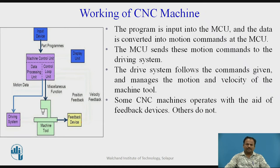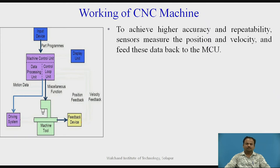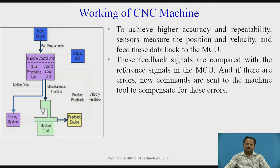Some CNC machines operate with the aid of feedback devices; others do not. Without feedback, the tools may overshoot or may not reach the desired position because of inertia, wear and tear, and friction. To achieve higher accuracy and repeatability, sensors measure the position and velocity and feed these data back to the MCU. These feedback signals are compared with the reference signals in the MCU, and if there are errors, new commands are sent to the machine tools to compensate for these errors.